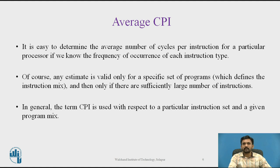The time required to execute a program containing IC instructions is T = IC × CPI × τ. This is the fundamental formula for CPU execution time.